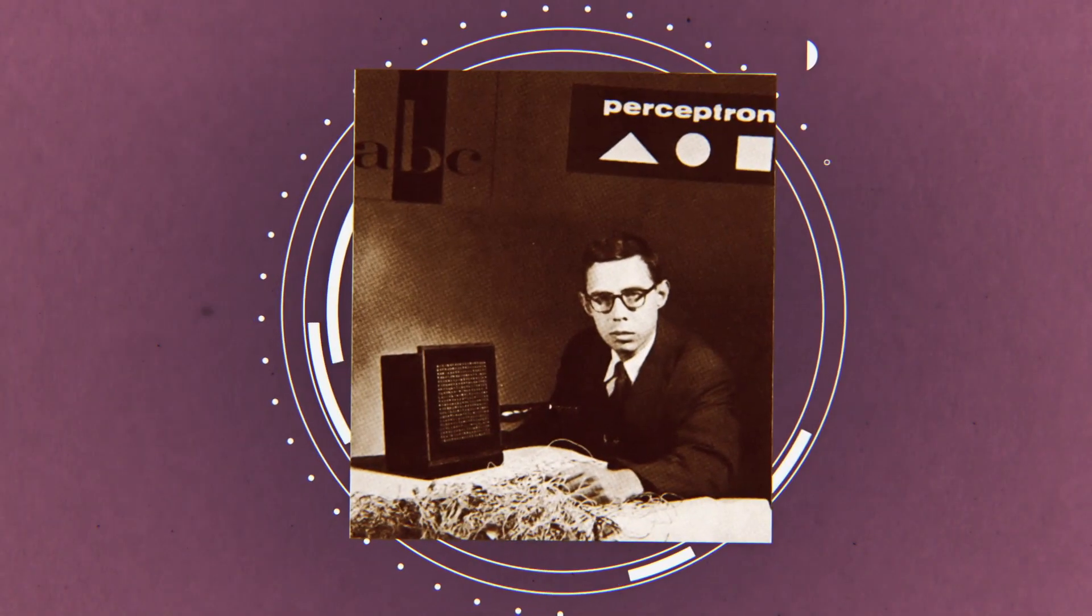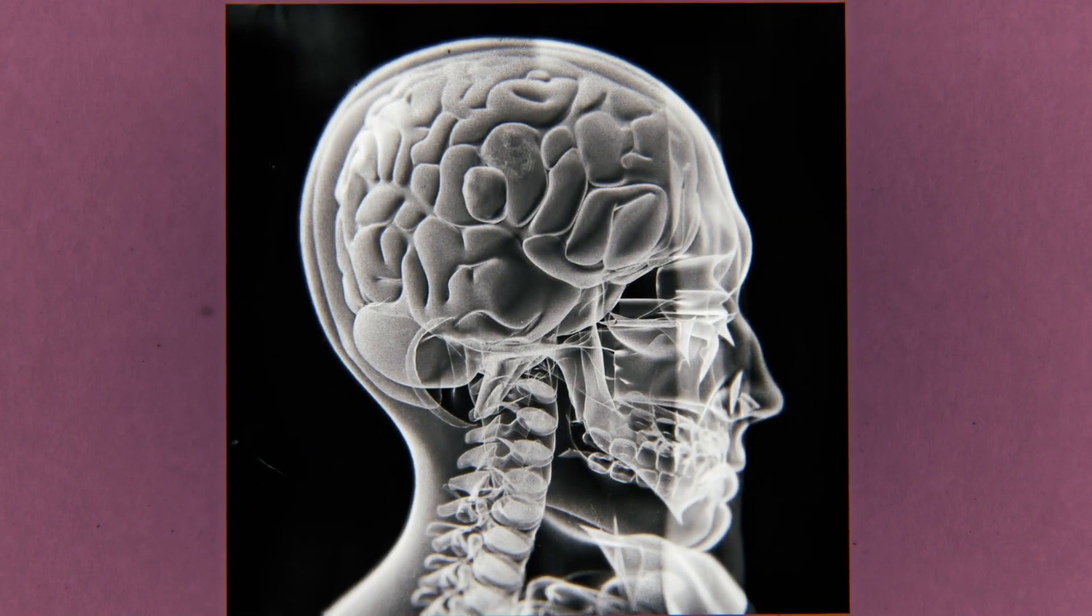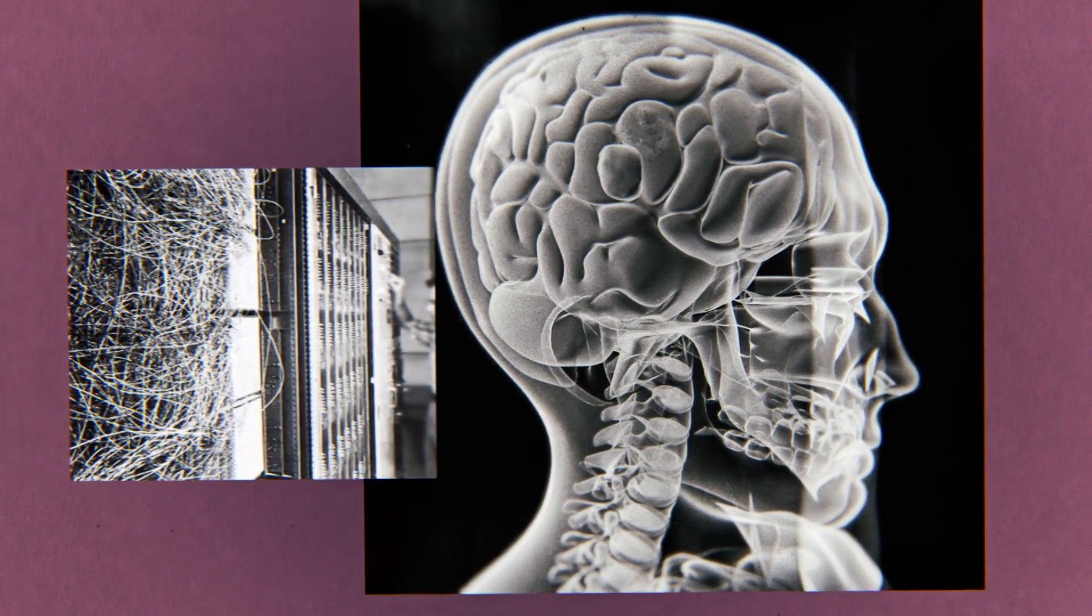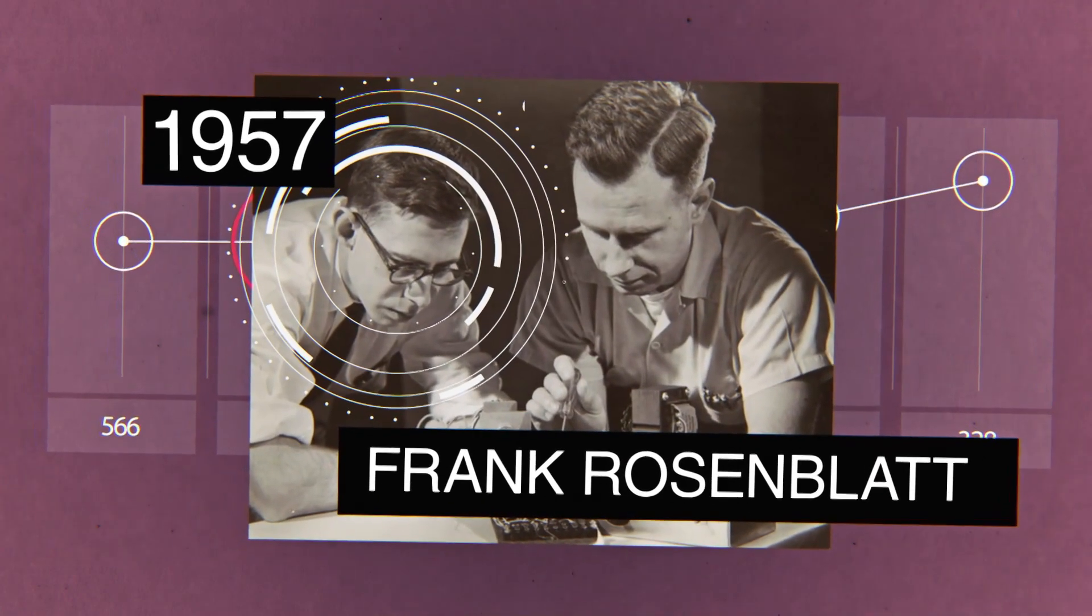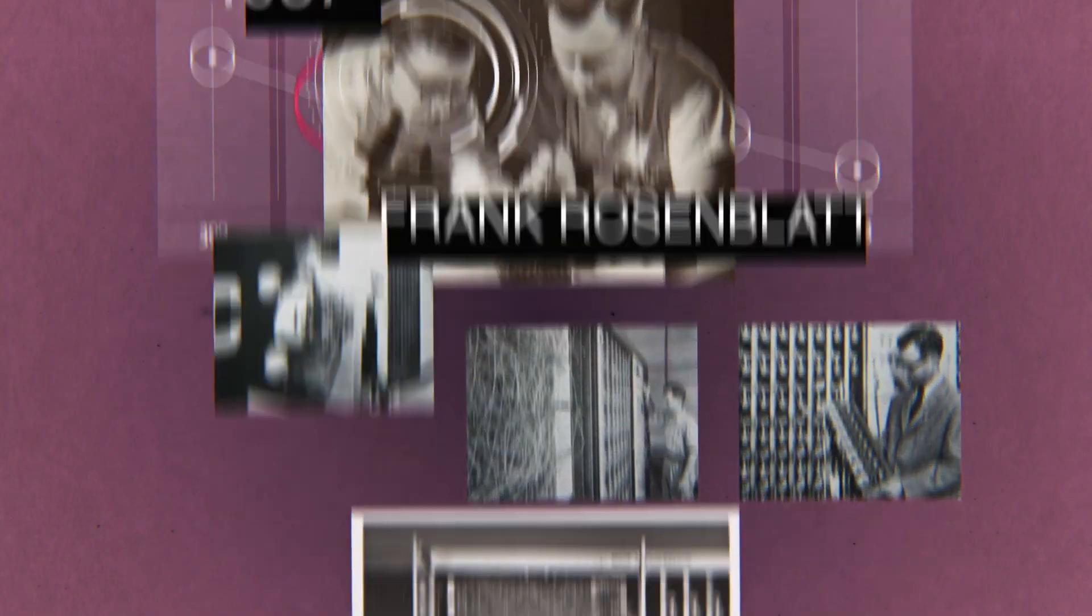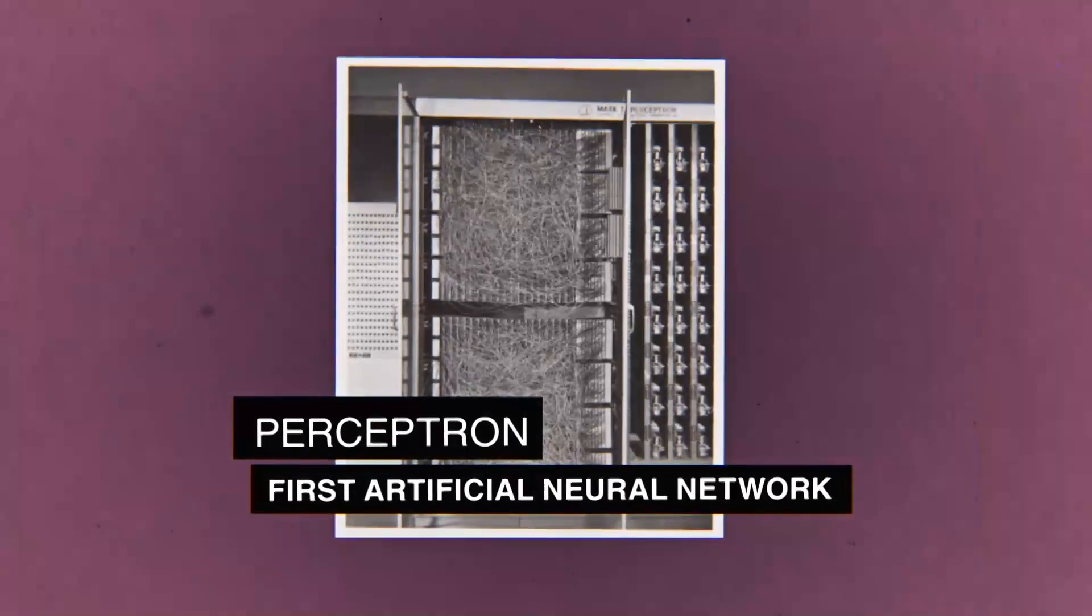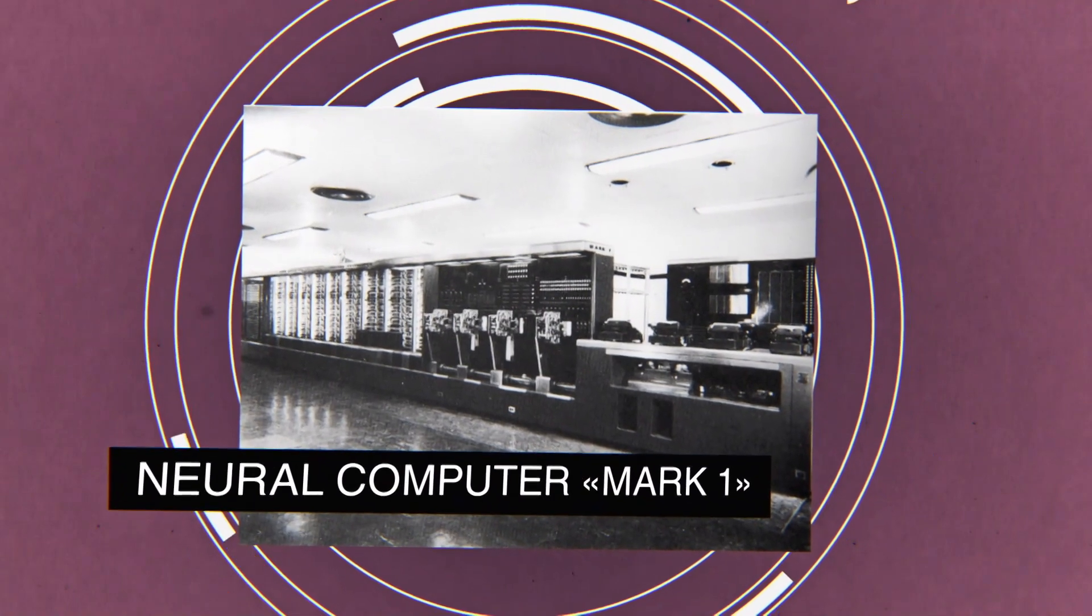The idea of creating the first artificial neural network was born as early as in the middle of the 20th century. At that time, scientists suggested that if they emulate the operation of the brain neurons somehow, they would be able to create a truly intellectual computing machine. In 1957, the American scientist Frank Rosenblatt managed to design the first mathematical model of the work of neurons. It was called Perceptron, and became, in fact, the first artificial neural network in history. A year later, it was used as a basis for creating the neural computer Mark I, which could recognize the letters of the Latin alphabet.